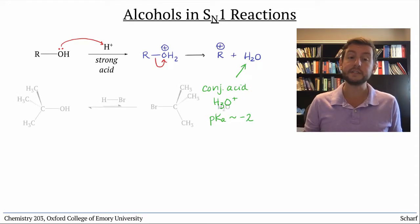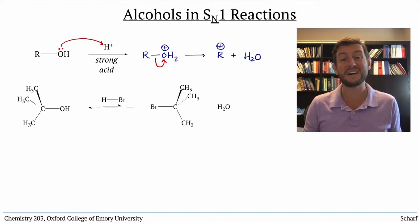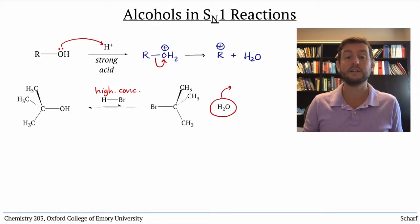For instance, tert-butanol reacts with HBr to give tert-butyl bromide via an SN1 mechanism. This reaction requires a high concentration of HBr and the removal of water to drive the reaction forward by Le Chatelier's principle.